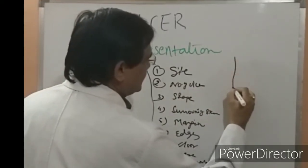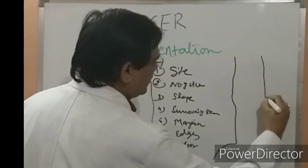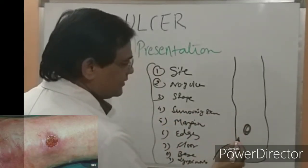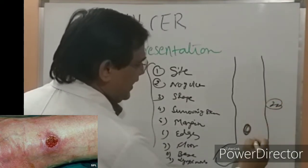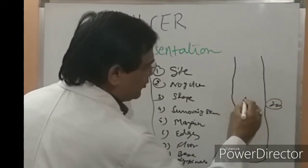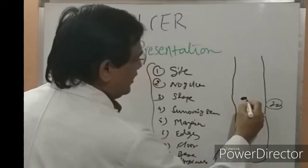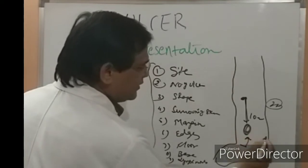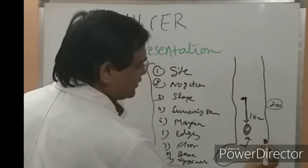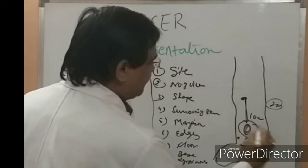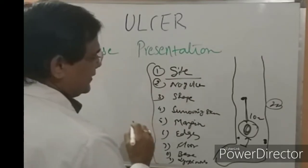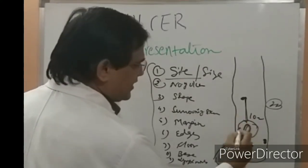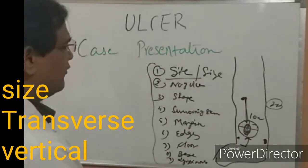For site: the ulcer is present over the left leg in the distal part — from the bony prominence, it is vertically around 10 centimeters below the knee and 4 centimeters above the ankle. You should define the exact site using bony prominences like the medial and lateral malleolus. For size, you have to state the measurement in both transverse and vertical directions — in this case around two by two centimeters.